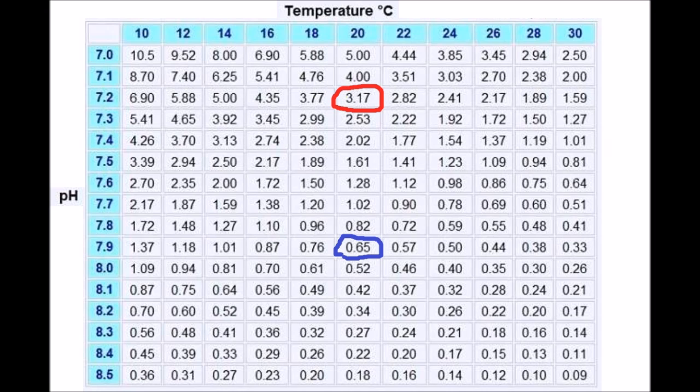I recommend you have a look at that graph and find where your pond sits, so you know your maximum ammonia level. You might want to reduce your pH if ammonia is getting a bit high — it's just something to think about to manage your pH better.